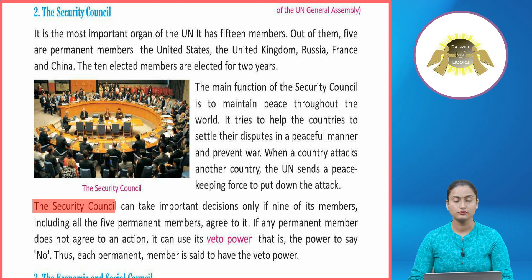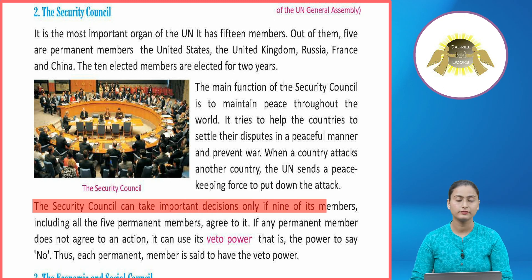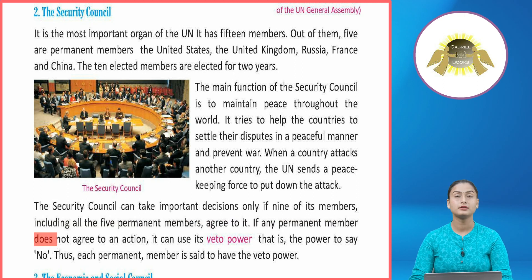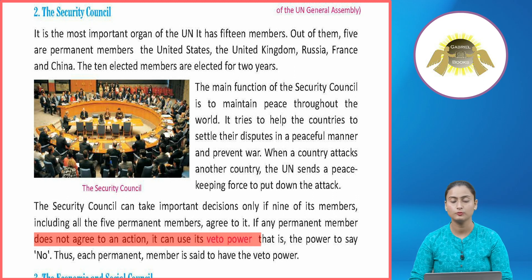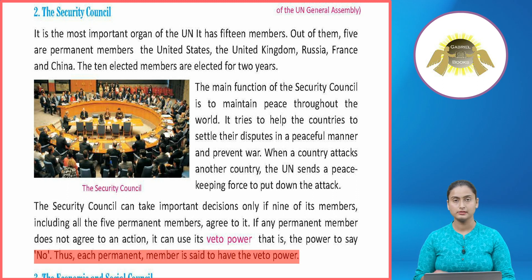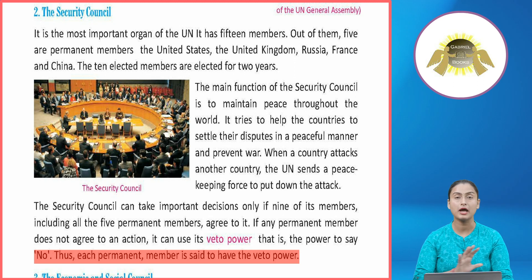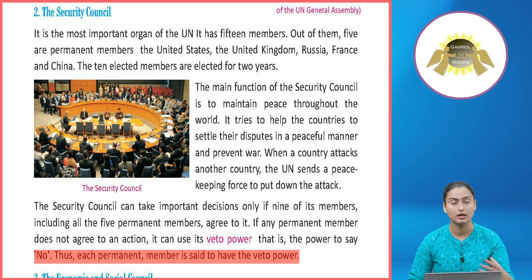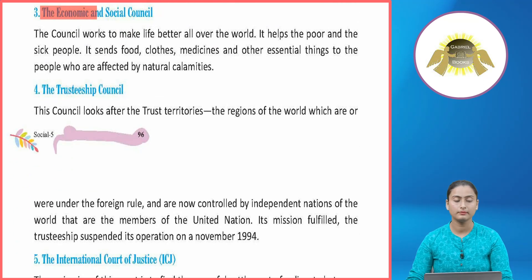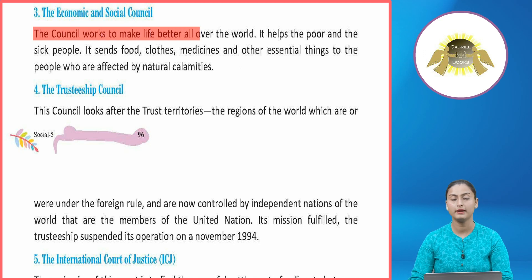The Security Council can take important decisions only if nine of its members, including all five permanent members, agree to it. If any permanent member does not agree to an action, it can use its veto power — that is, the power to say no. Each permanent member is said to have the veto power. Agar koi bhi important matter pe decision karna hai toh 15 mein se 9 members ki manzoori chahiye hoti hai, jis mein se panchhon permanent members ko haan bolna zaroori hai. Ek bhi permanent member agar na bol diya toh us cheez pe decision nahi hoti.